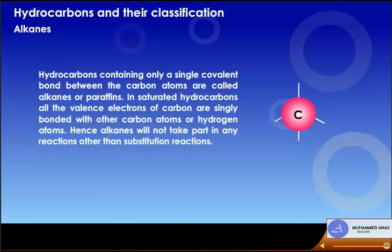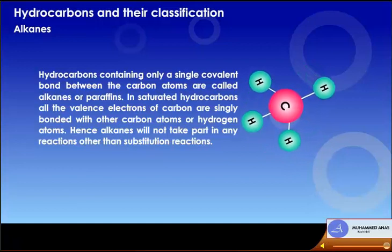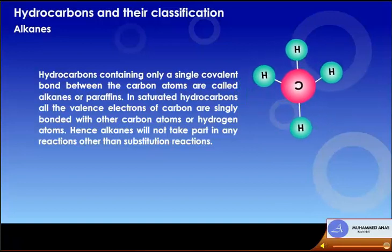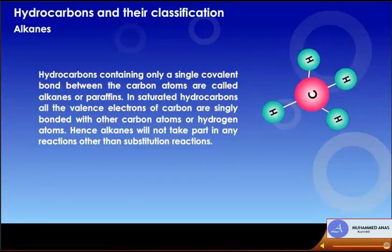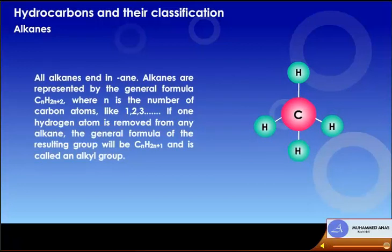Alkanes are hydrocarbons containing only single covalent bonds between carbon atoms, also called paraffins. In saturated hydrocarbons, all valence electrons of carbon are singly bonded with other carbon or hydrogen atoms. Alkanes take part only in substitution reactions. All alkanes end in '-ane'. Alkanes are represented by the general formula CnH2n+2, where n is the number of carbon atoms. If one hydrogen atom is removed from any alkane, the resulting group with formula CnH2n+1 is called an alkyl group.